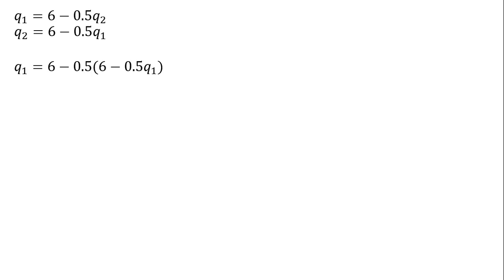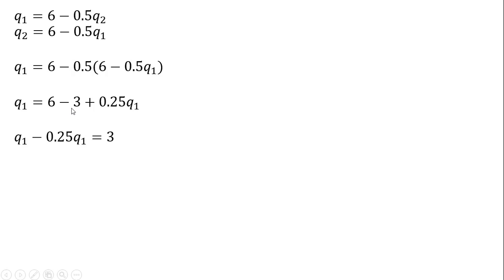We now have two reaction functions — firm 1's and firm 2's — giving us two equations and two unknowns. I'll substitute firm 2's reaction function into firm 1's reaction function. Where firm 1's reaction function has Q₂, I plug in 6 minus ½Q₁ and solve for Q₁. Minus 0.5 times 6 is minus 3, and minus 0.5 times minus 0.5 gives us plus 0.25 multiplied by Q₁. Then 6 minus 3 equals 3, and subtracting minus 0.25Q₁ from both sides.